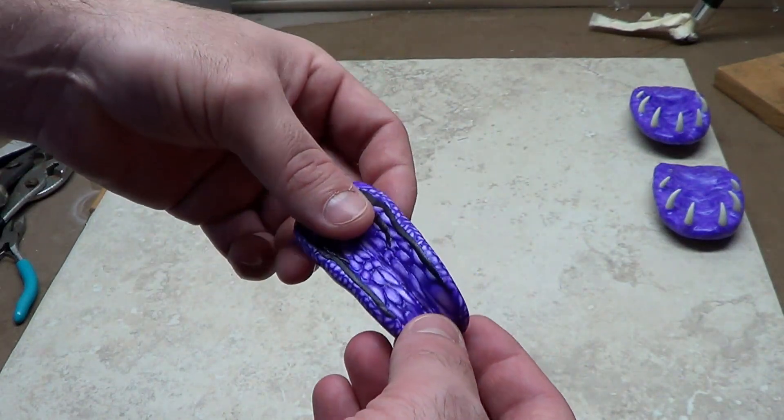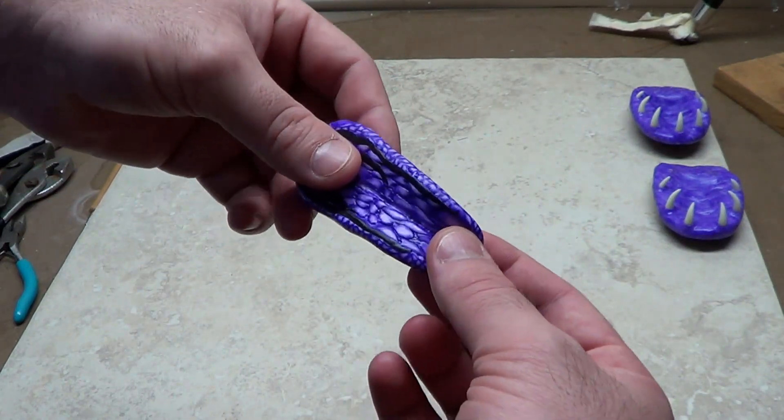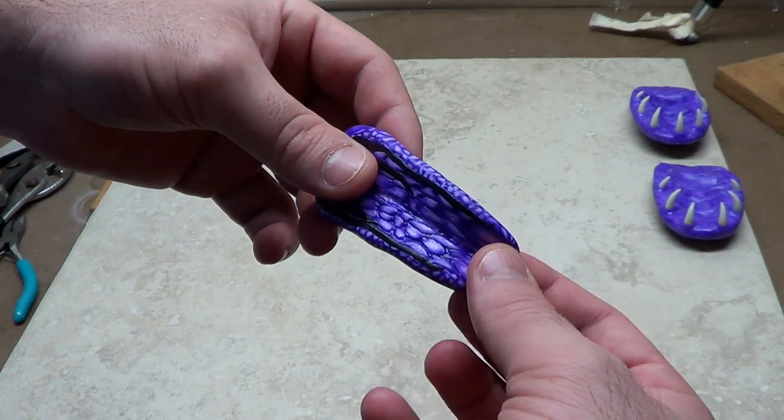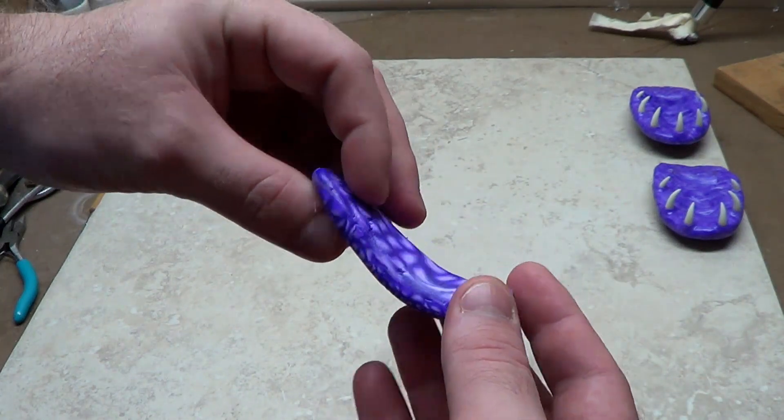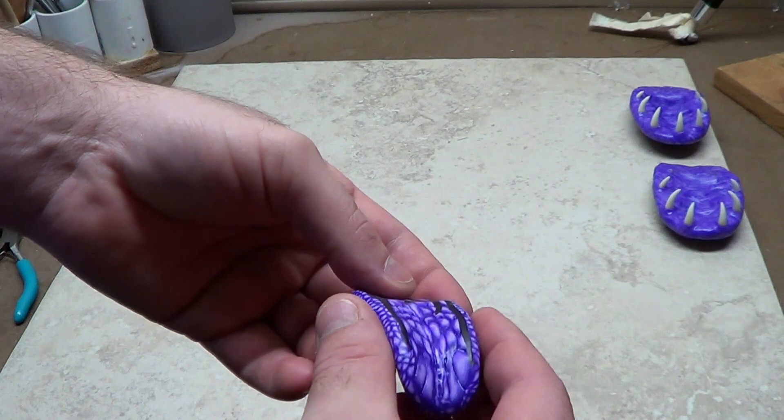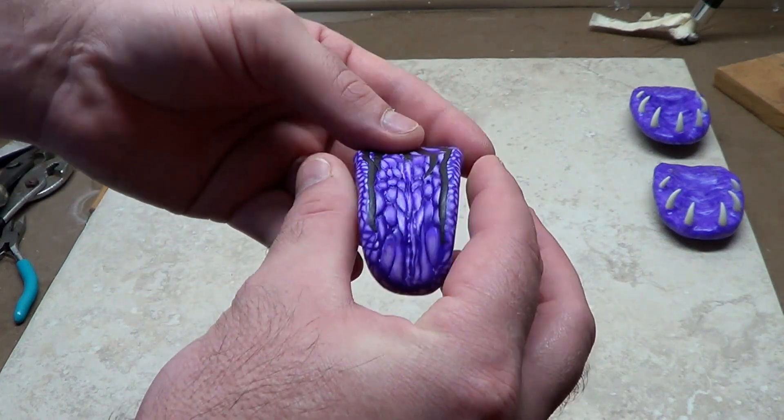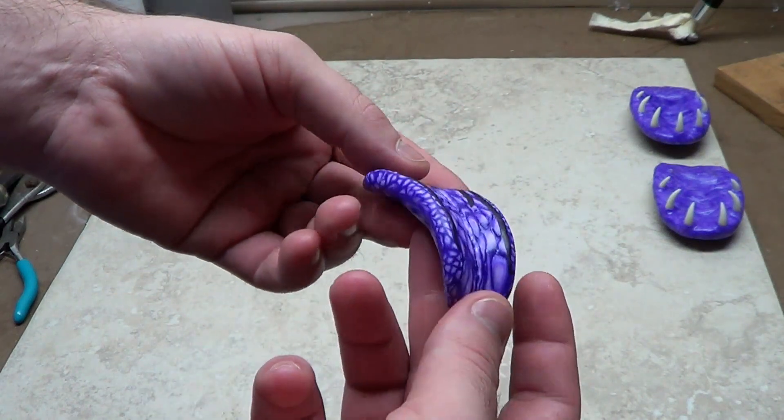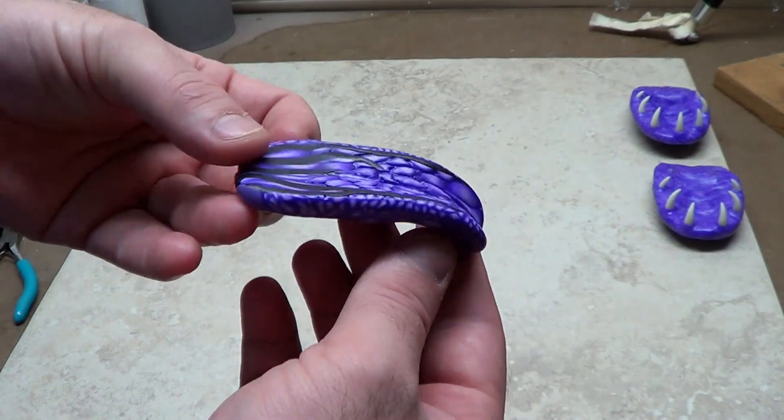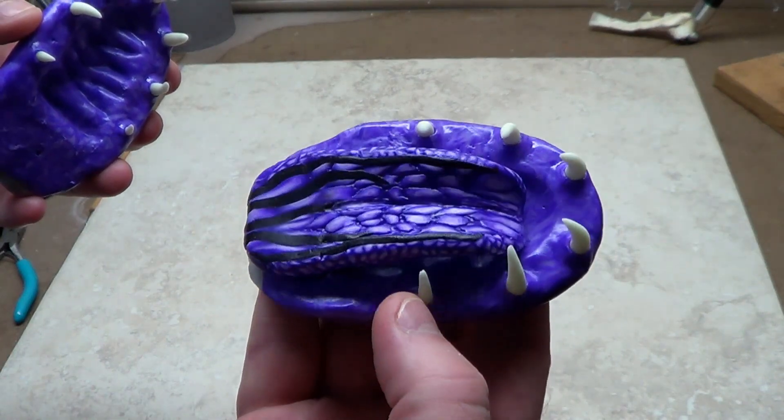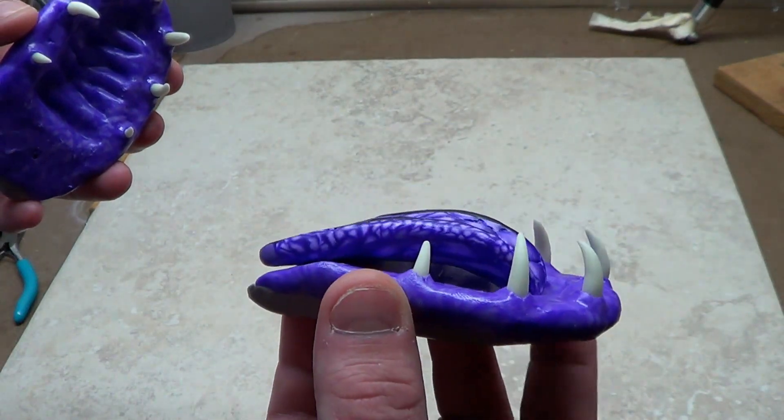I didn't film it. All I did was grab it here and wiggle and pull real slow, and it elongated it. And then I just pinched it like this, squeezed it, and just gave it its shape.